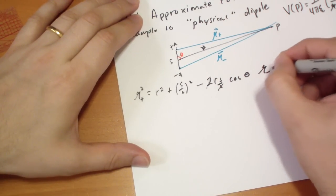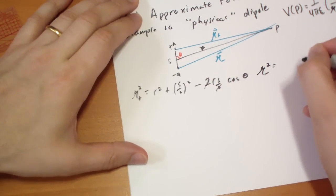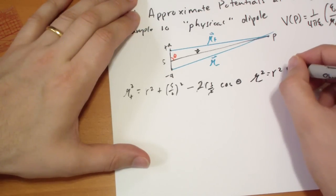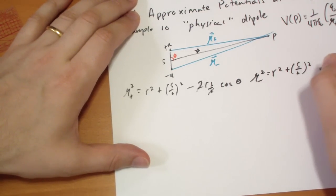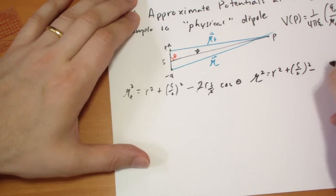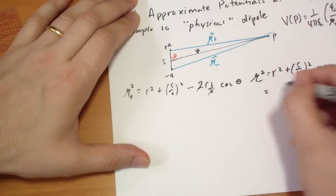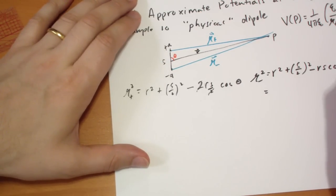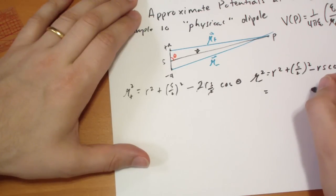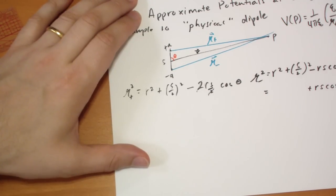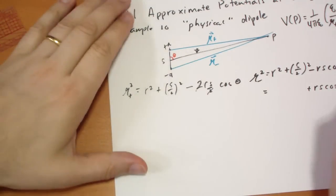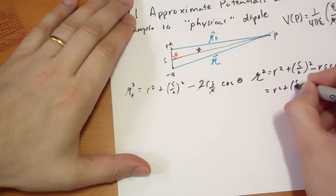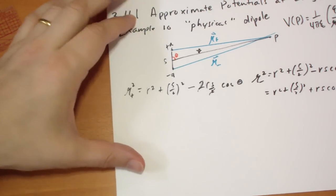We can rewrite that R plus squared is equal to R squared plus S over 2 squared, plus minus 2 R S over 2 cosines of theta, and these two's cancel, so it's just R S cosines of theta. And for the negative direction, we're going to get R squared plus S over 2 squared minus R S cosines of theta.